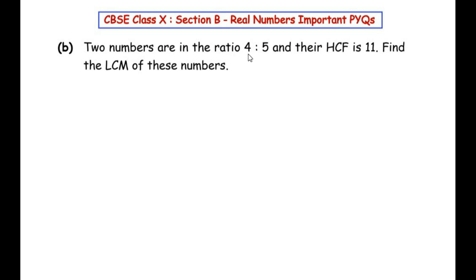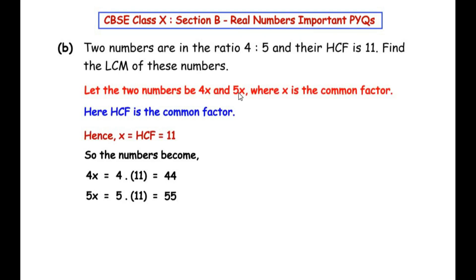Two numbers are in the ratio 4:5 and their HCF is 11. Find the LCM of these numbers. We do not know what the numbers are, but we know they form a ratio of 4:5 and their highest common factor is 11. Let the two numbers be 4x and 5x, where x is the common factor. Since the HCF is 11, x equals 11.